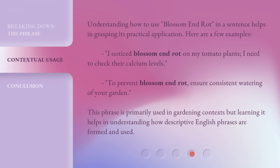Understanding how to use 'Blossom and Rot' in a sentence helps in grasping its practical application. Here are a few examples: 'I noticed Blossom and Rot on my tomato plants — I need to check their calcium levels.' 'To prevent Blossom and Rot, ensure consistent watering of your garden.' This phrase is primarily used in gardening contexts, but learning it helps in understanding how descriptive English phrases are formed and used.